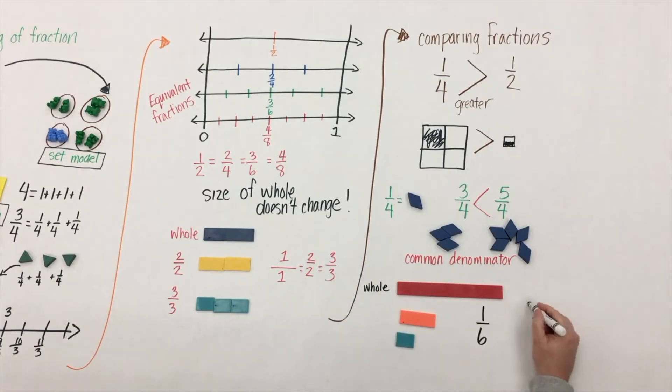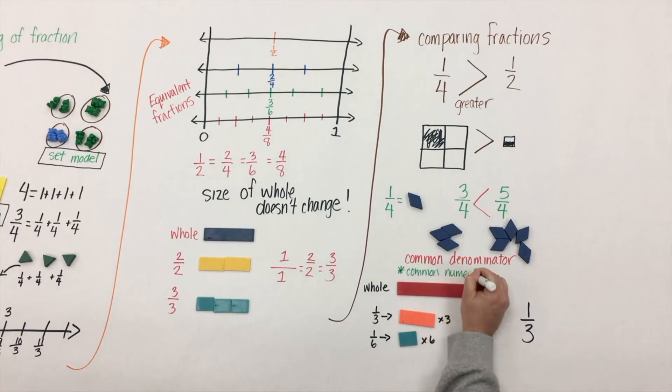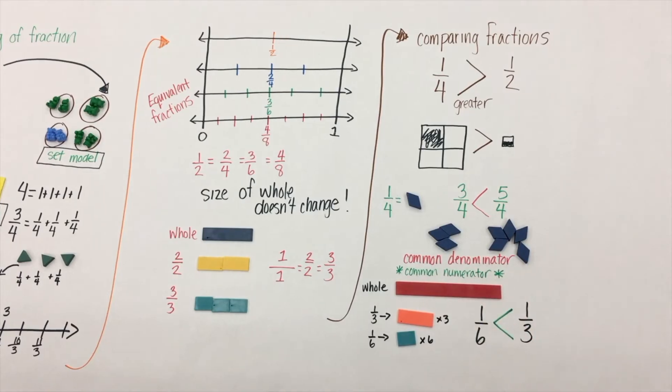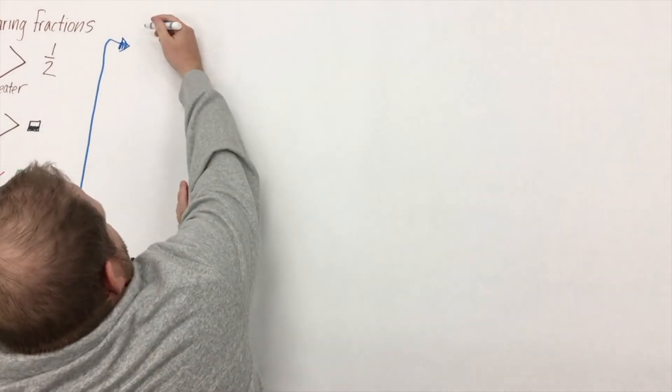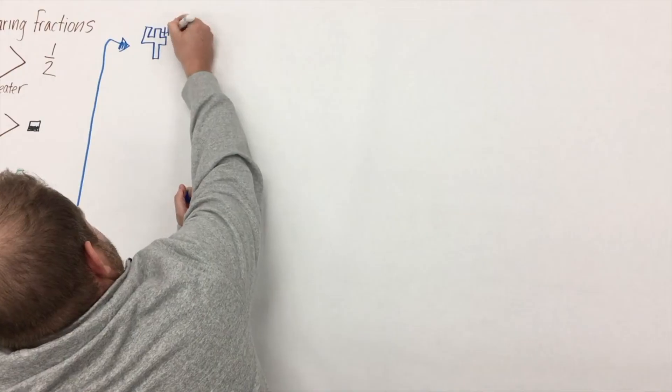Another way we can compare fractions is if we have a common numerator. Here we have one as a common numerator. Yeah, common numerator - it doesn't quite sound right. But here students have this understanding and should be building this understanding of a common denominator and common numerator. Here students can see that one-sixth is actually a smaller piece than one-third and therefore it's less.